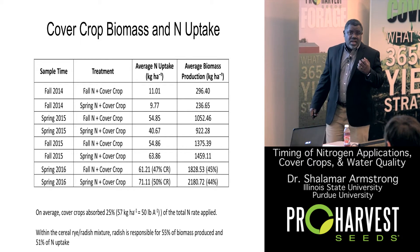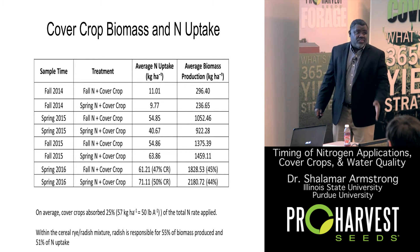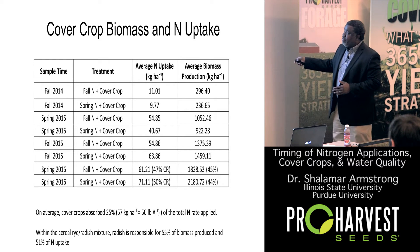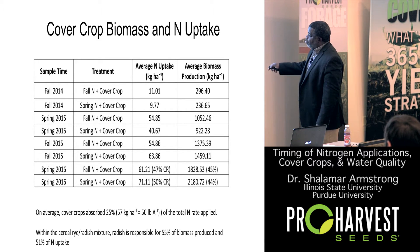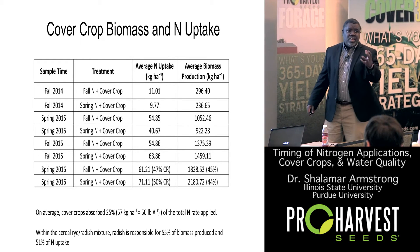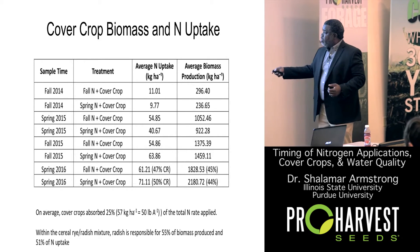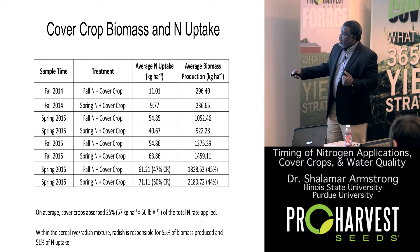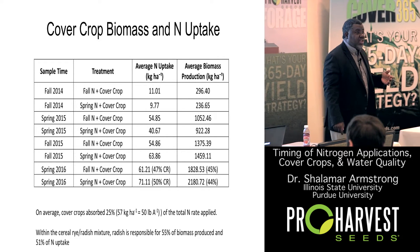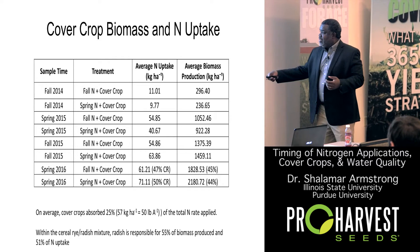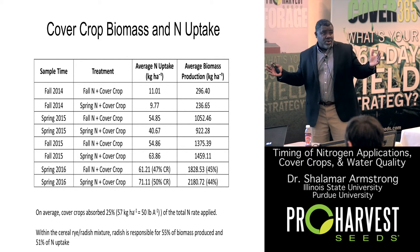In the spring plots, you didn't get the fall injection, although you got the strip. In the fall plots, you got the fall injection into the cover crops. There's not a big difference between the two. Overall, your cover crops have the ability to interact with about 25% of what you apply. We apply 200 pounds, and here's 50 pounds found in the residue. The ratio of cereal rye to radish is 8% radish and 92% cereal rye, but the radish represented 55% of the biomass and 51% of the uptake of nitrogen. A little bit of radish goes a long way, and it only grows in the fall.